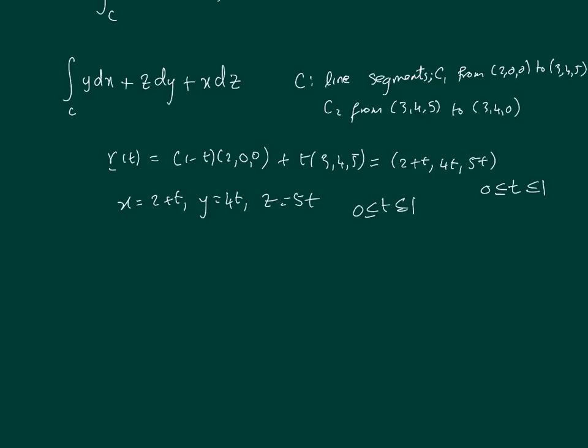This is just over C₁, then we have C₂ as well which we'll do in a second. But let's do the first one. Along C₁, the integral ∫y dx + z dy + x dz becomes the integral from 0 to 1. We have y = 4t, and dx means x' which is 1, so 4t·1·dt. Then z = 5t, dy means y' which is 4, so 5t·4·dt.